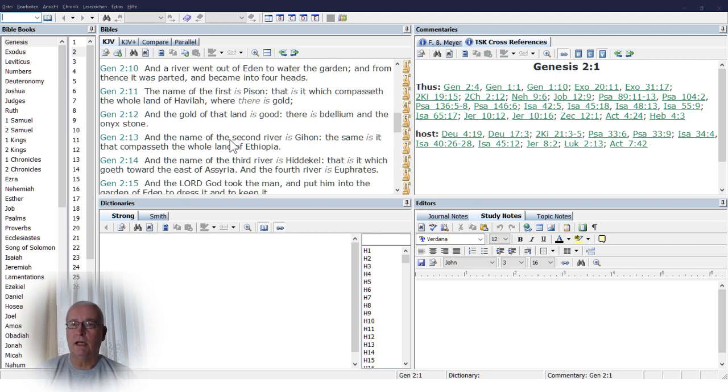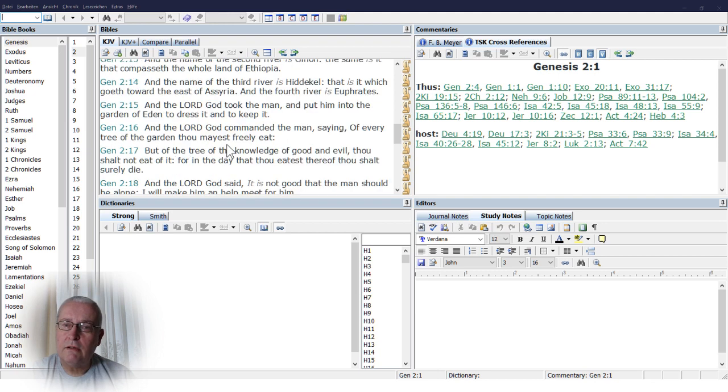The name of the first is Pison. That is it which compasses the whole land of Havilah, where there is gold. And the gold of that land is good. There is the lium and the onyx stone. And the name of the second river is Gihon. The same is it that compasses the whole land of Ethiopia. And the name of the third river is Edekiel. That is it which goeth forth the east of Assyria. And the fourth river is Euphrates. And the Lord God took the man and put him into the garden of Eden to dress it and to keep it.